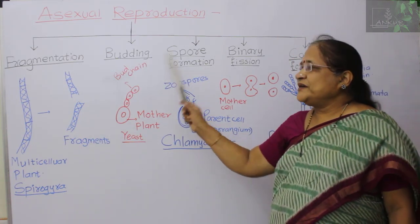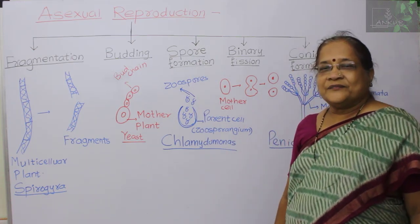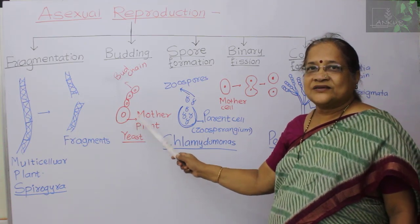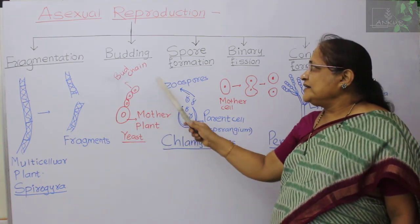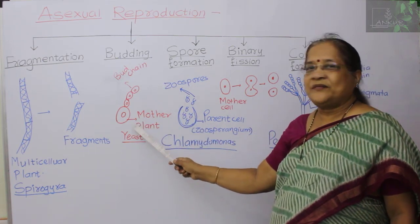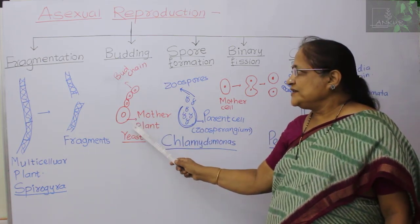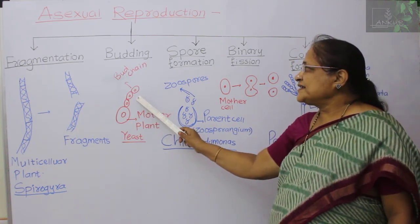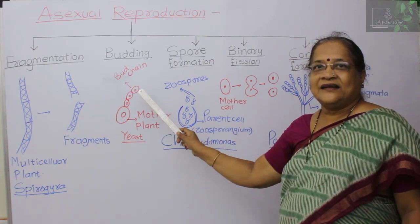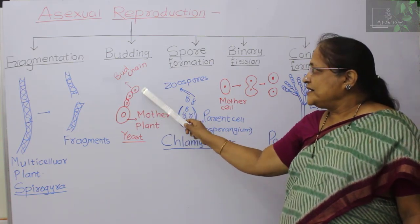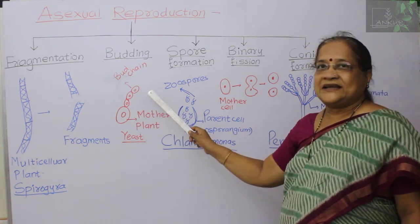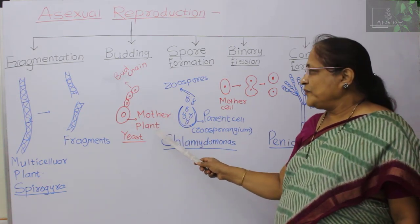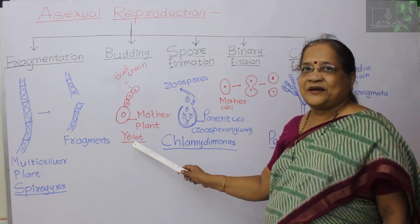Another method is budding. For example, fungi like yeast, which are unicellular plants. These unicellular plants show budding — the mother plant is unicellular, and on this mother plant, very small buds form in a chain. These buds get detached from the parent plant, then grow and form new mature yeast plants.